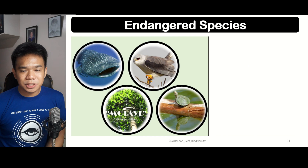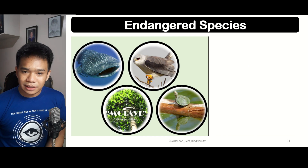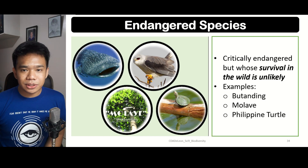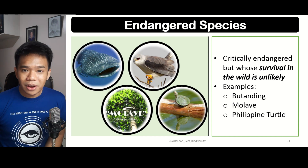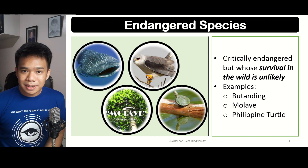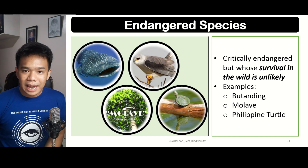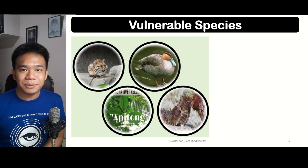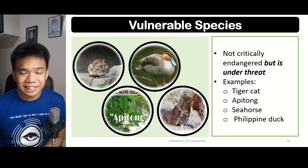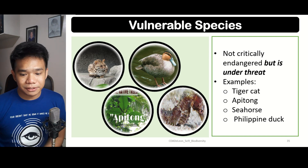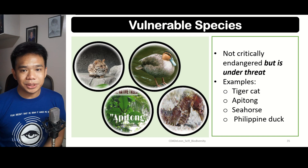Next, we have endangered species. These are also considered critically at risk; however, their survival in the wild is very unlikely. Some examples of endangered species in the country are the butanding, the molave tree, and the Philippine turtle. Lastly, vulnerable species are those not yet critically endangered but are under threat. Examples in the Philippines include the tiger cat, the pitong tree, seahorses, and the Philippine duck.